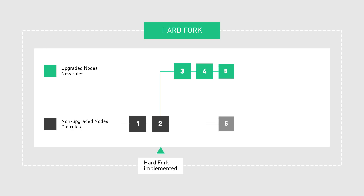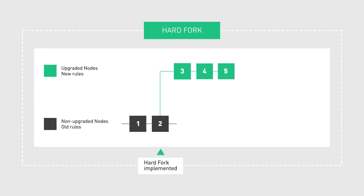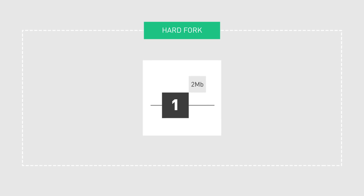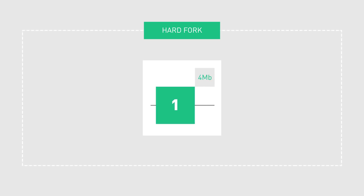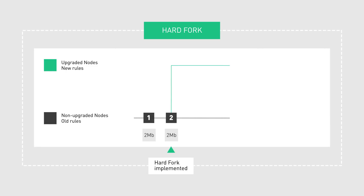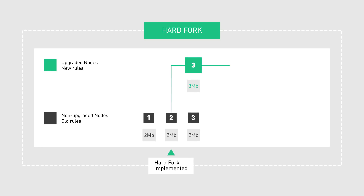Hard forks can be used to change or improve an existing protocol, or even to create a new, independent protocol and blockchain. Imagine a change in a protocol which increases the block size from 2 megabytes to 4 megabytes. If an updated node tries to push a 3 megabyte block to the blockchain, the older, non-updated nodes will not see this block as valid, and they'll reject it.